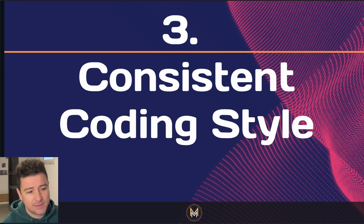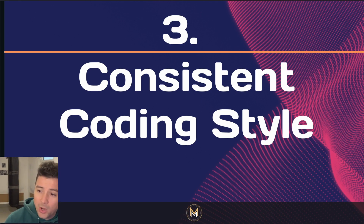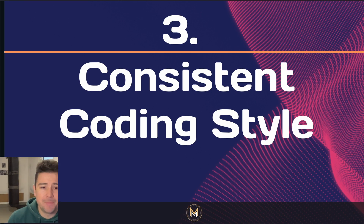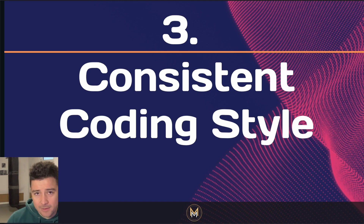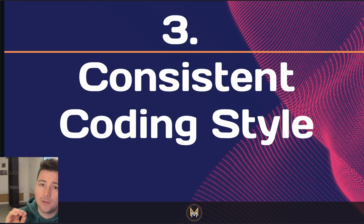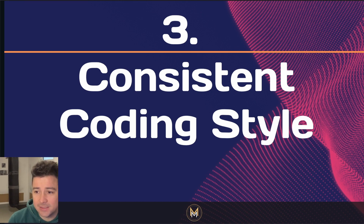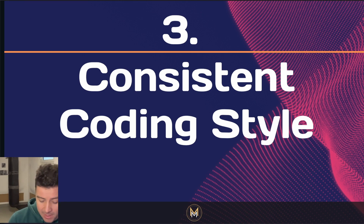At number three, we have consistent coding style. Consistency — like in real life — enforce a consistent coding style across your project. Use tools like linters and code formatters to maintain uniformity in coding conventions. Linters and code formatters like Prettier are already installed in Visual Studio Code. Pro tip: if you open a GitHub repository and press the period key on your keyboard, it will open it in the Visual Studio Code browser version. Consistency in coding styles enhances readability and makes collaboration smoother by reducing friction caused by style differences.